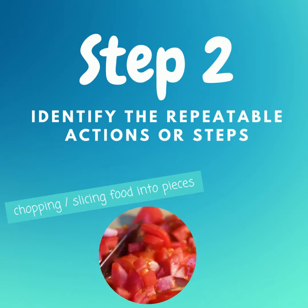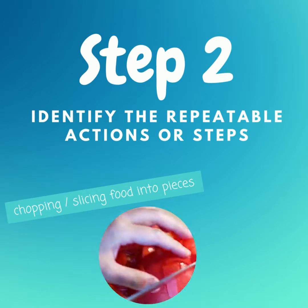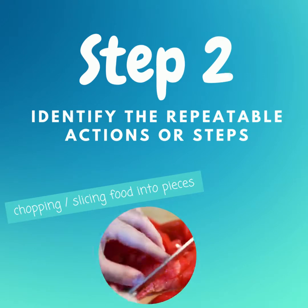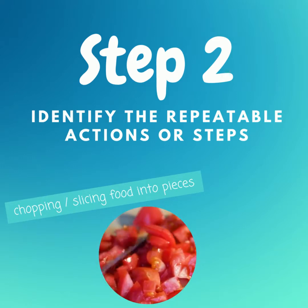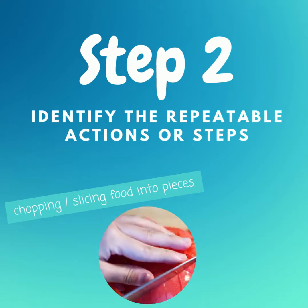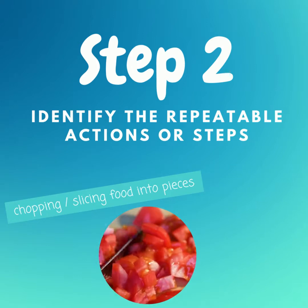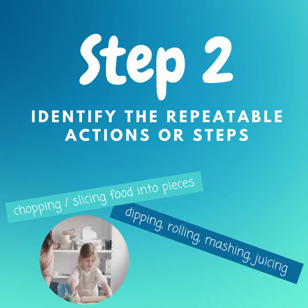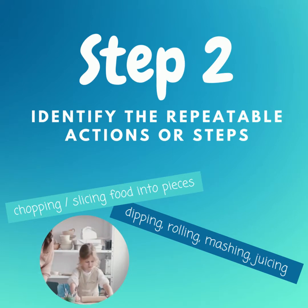The next step is to look at that routine and identify the repeatable actions or steps for that routine. So it may be chopping and slicing the food into pieces — the actual act of chopping will be the movement you're going to use as the repeatable action for that routine. Or maybe the food you're preparing or eating involves dipping, for example dipping veggies in dip or dipping fruit in yogurt or peanut butter.